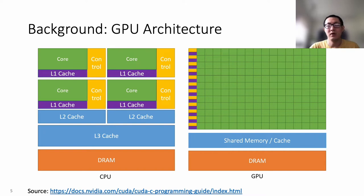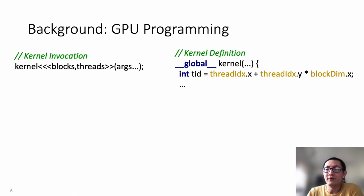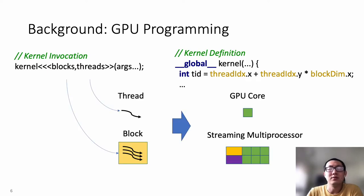Similar to CPU, a GPU contains multiple cores, caches, and shared memory. Unlike CPU, the GPU is specialized for highly parallel computations, and therefore the GPU is designed such that more transistors are devoted to data processing rather than data caching and flow control. This shows an example of a GPU program. The kernel function implements a kernel that will be executed in GPU. Each core will execute the same kernel function with different inputs. The program uses thread ID to distinguish different threads. A GPU program usually contains multiple threads; each thread is executed on a GPU core, and the threads are grouped into blocks. Each block is executed on one streaming multiprocessor.